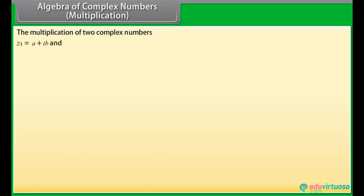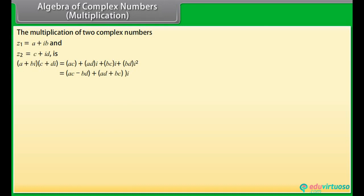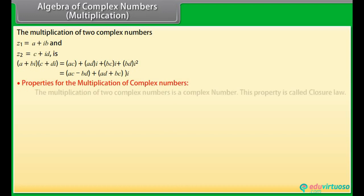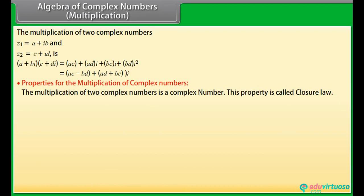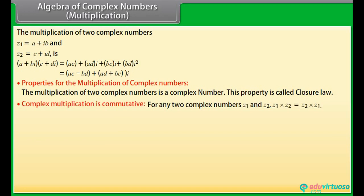Algebra of complex numbers — Multiplication: The multiplication of two complex numbers Z1 and Z2 is AC minus BD plus (AD plus BC) iota. Properties for multiplication: the product of two complex numbers is a complex number — this is the closure law. Complex multiplication is commutative: for any two complex numbers Z1 and Z2, Z1 into Z2 equals Z2 into Z1.